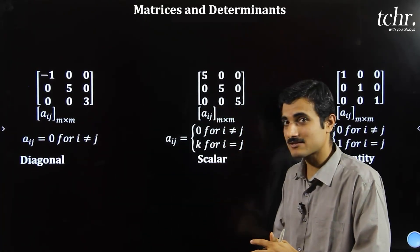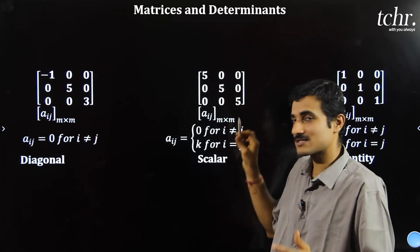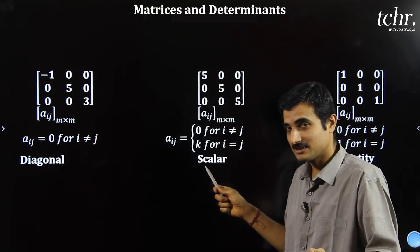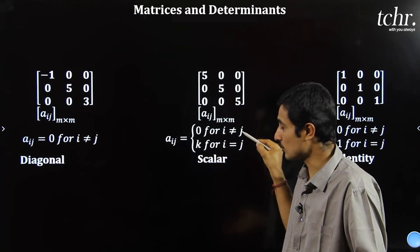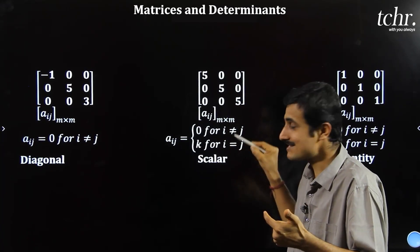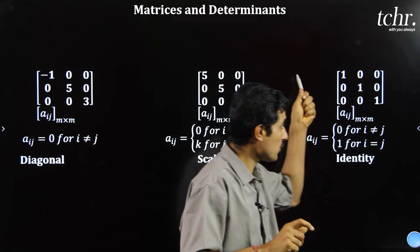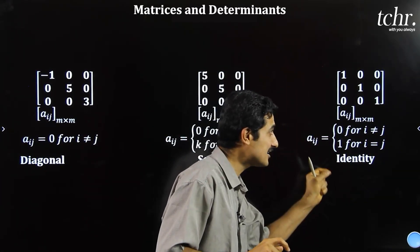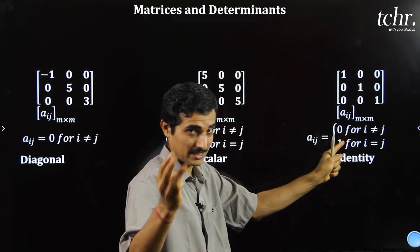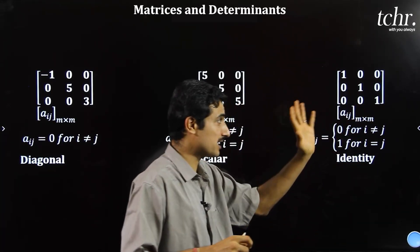Scalar matrix is a special case of diagonal matrix where all principal diagonal elements are equal. When i not equal to j, the element is 0; when i equals j, the element is k. If that number k is 1 — all diagonal elements are 1 — we call it an identity matrix. Identity matrix of 3 by 3 order, 2 by 2 order — questions are created from this.